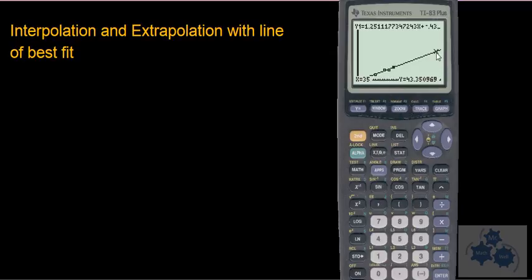If it's on your screen, then the calculator will figure it out for you. So x equals 35, according to this line of best fit and the general relationship between x and y, right, the general description of what's happening here - if you had an x value of 35, you should have a y value of around 43. So that's interpolation and extrapolation with a line of best fit on your graphing calculator.